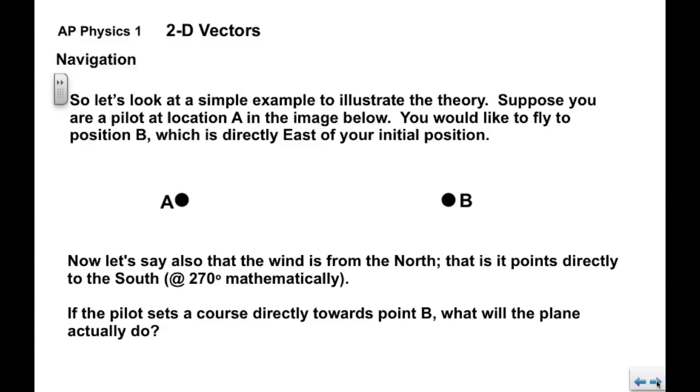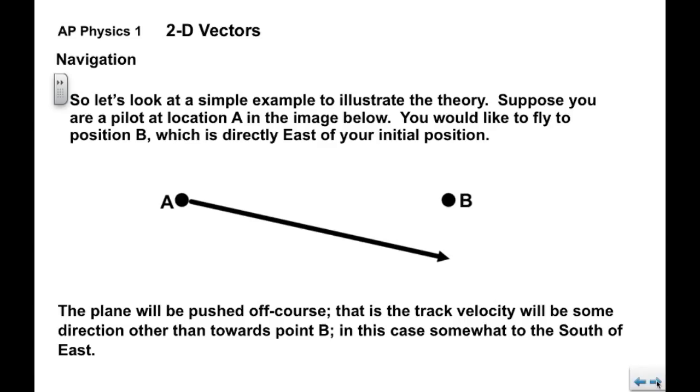Now if the pilot were to set the course or point the plane directly at point B, what would the plane actually do? Think about that for a second. Because the wind would be pushing to the south the entire time, we would say that the plane would get pushed off course. Ultimately, the track velocity would be some direction other than due east, some angle to the south of east.